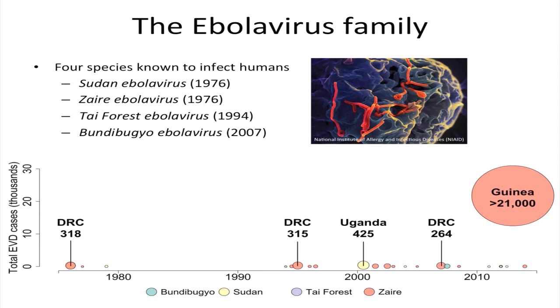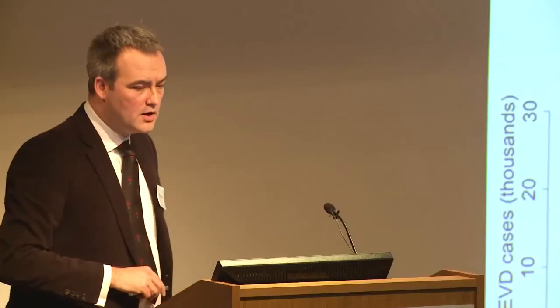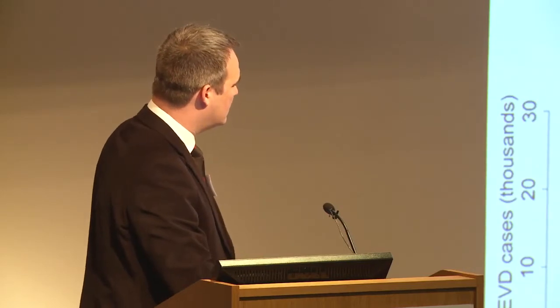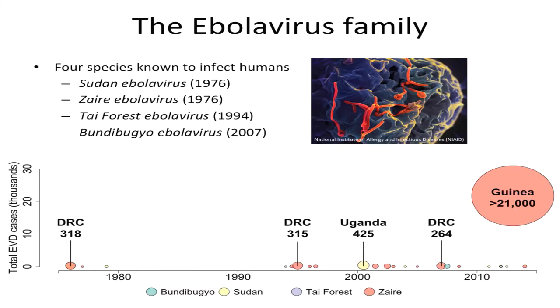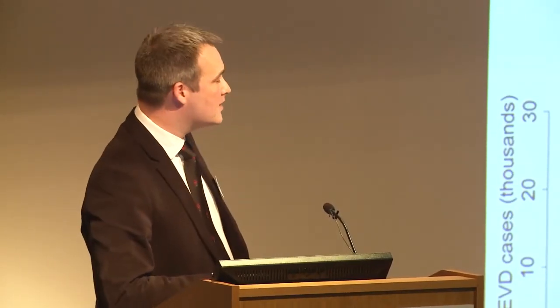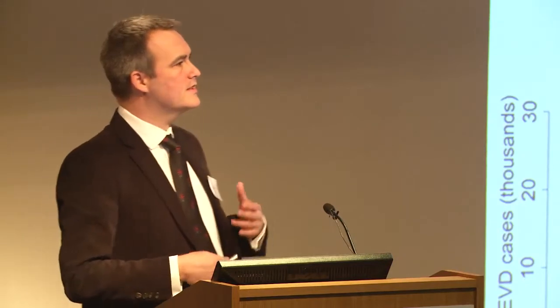The other bit in this time series that perhaps you didn't get from David's historical overview is this large gap here. The two things I want you to realize: the frequency of epidemics as we move forward is much higher than it has been, and there's no trend in the size — but we now know that the epidemics we can have can reach much higher levels than any of us would have predicted at the start of last year.